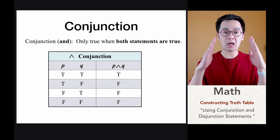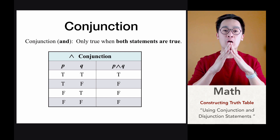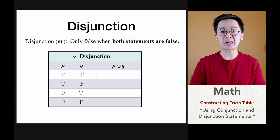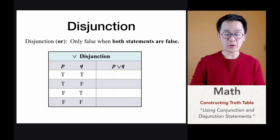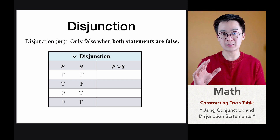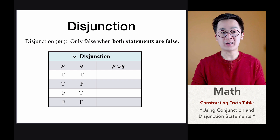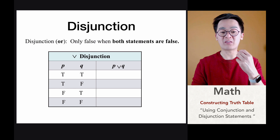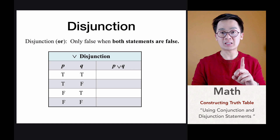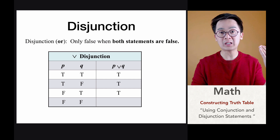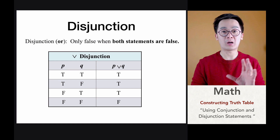This particular rule only applies for an AND operation. Now, what if we have a disjunction or an OR operation? According to the definition, the disjunction is only false when both statements are false; otherwise the rest of them will be true. So if we have p and q and we're going to find the value of p or q, it will only be false when both of them are false. That means T and T will be true, T and F will be true, F and T will also be true, and the only combination that gives us a false statement is when p and q are both false.